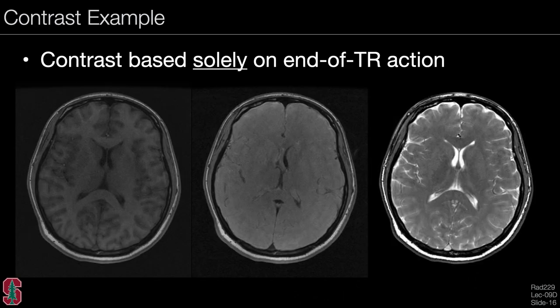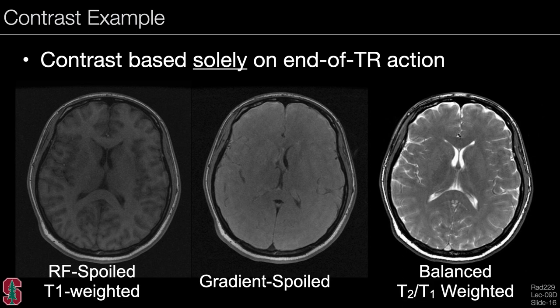Comparing sequences from left to right: RF spoiled T1 weighted imaging where fluid is dark, gradient spoiled imaging with T1 over T2 contrast, and balanced SSFP imaging with T2 over T1 weighting. Balanced SSFP has the same basis of contrast as gradient spoiling, but fluids tend to be very bright. This contrast difference is based solely on the end-of-TR action.